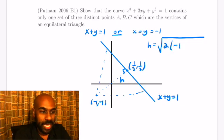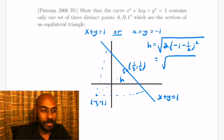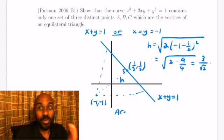So h is the square root of twice the quantity negative 1 minus one-half all squared, which is the square root of two times nine over four, and then that simplifies to three over root two.